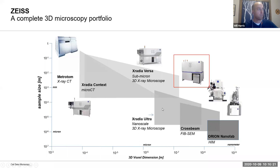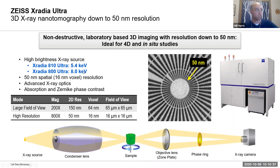Doing it in a non-destructive way is really the key strength of the technique. I wanted to say a few words first about the Ultra instrument. We do make a very nanoscale 3D x-ray microscope from Zeiss called the XRadia Ultra, which comes in a couple of different flavors.